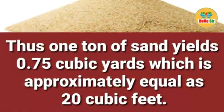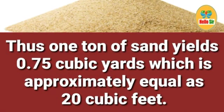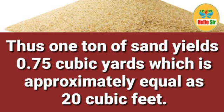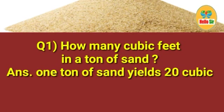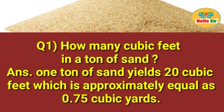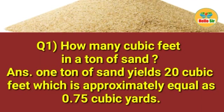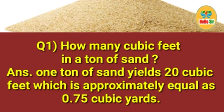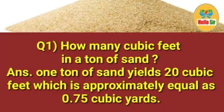Thus, one ton of sand yields 0.75 cubic yards, which is approximately equal to 20 cubic feet. So the answer is: one ton of sand yields 20 cubic feet, which is approximately equal to 0.75 cubic yards.